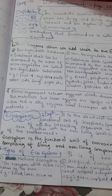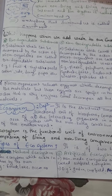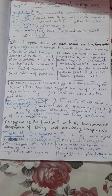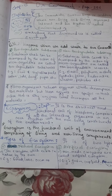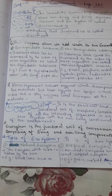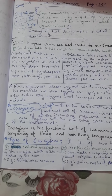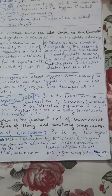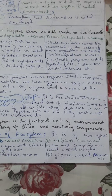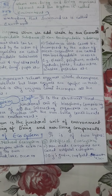Ecosystem is of two types. One is natural ecosystem, another one is artificial ecosystem. Natural ecosystems are those which exist in nature by themselves — there is no interception of humans. Examples are forests, lakes, oceans, etc. Artificial ecosystems are man-made ecosystems made by humans. Examples are garden, crop field, aquarium.